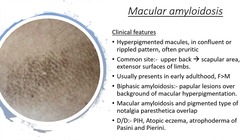Macular amyloidosis presents as hyperpigmented macules, either confluent or in a rippled fashion, and are almost always pruritic. The commonest sites are the upper back (scapular area) and extensor surfaces of the limbs. They are most common in females and in early adulthood. Biphasic amyloidosis consists of papular lesions over a background of macular hyperpigmentation. Macular amyloidosis and pigmented type of notalgia paresthetica can overlap.